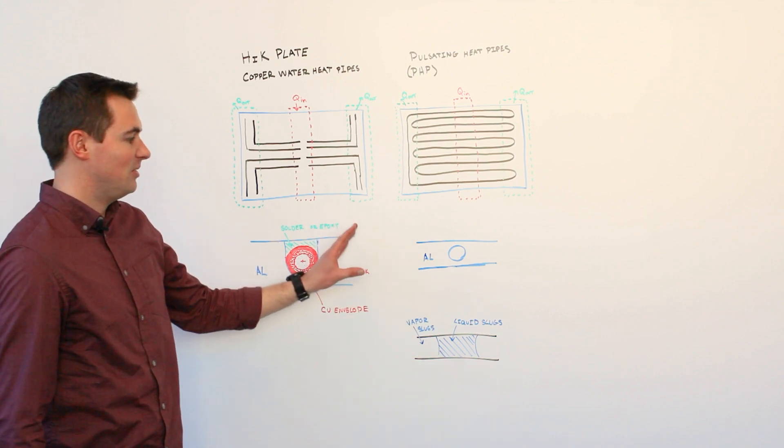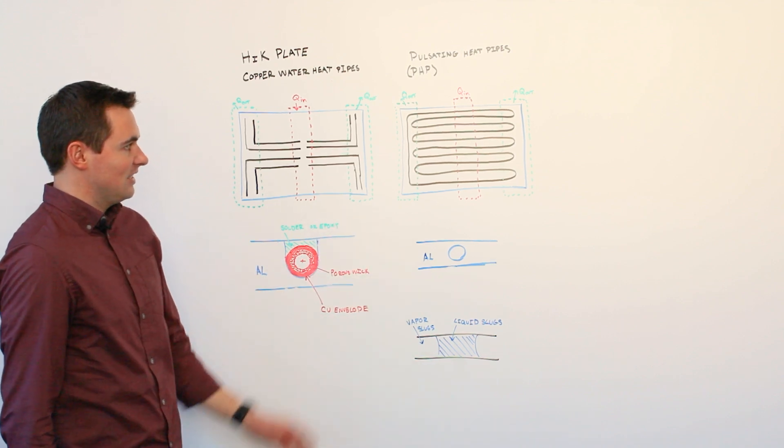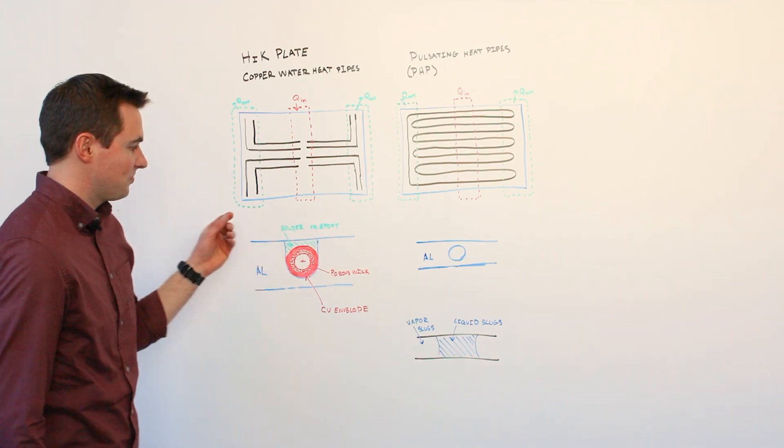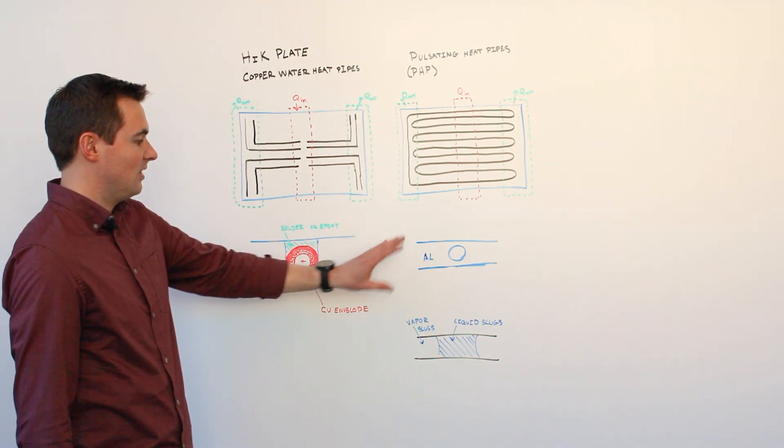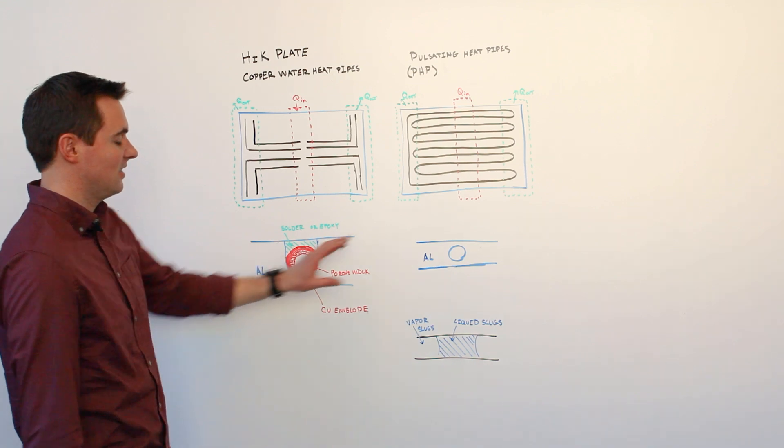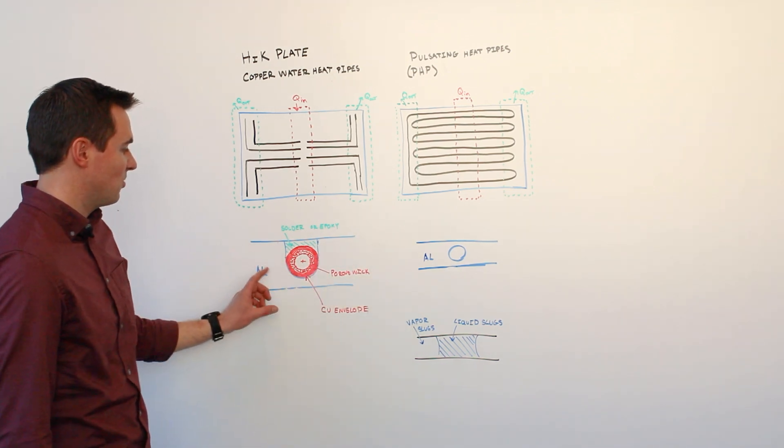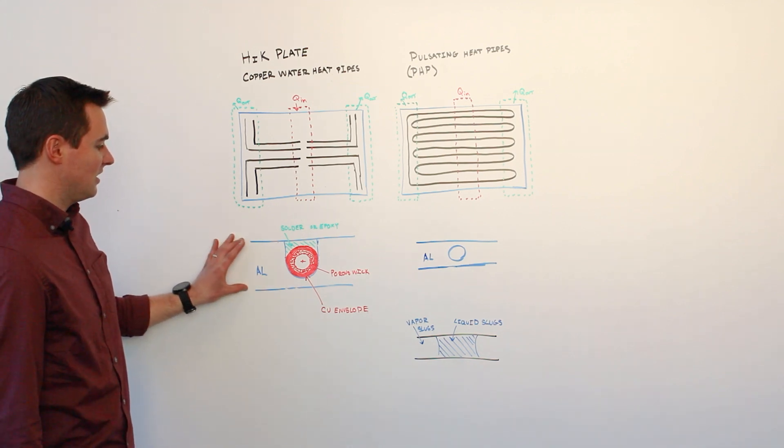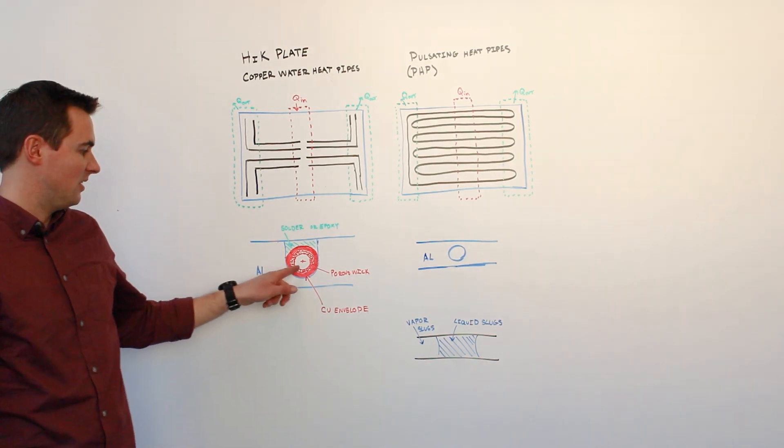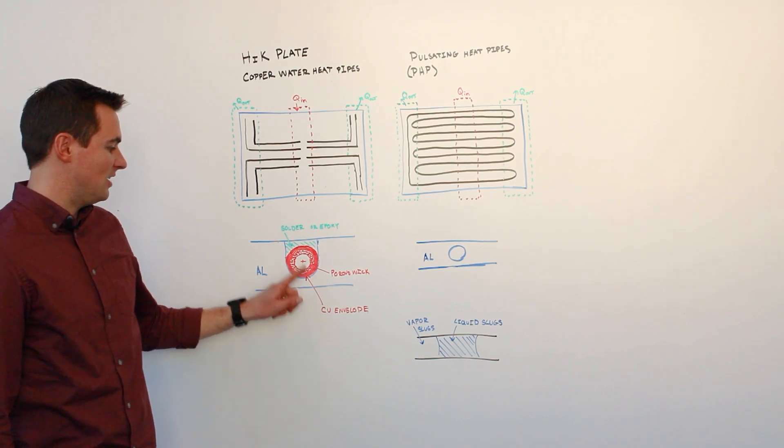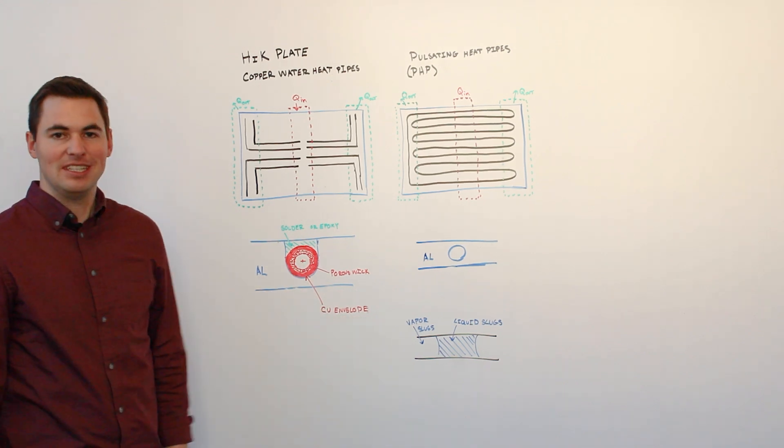And finally, pulsating heat pipes can be slightly more flexible as far as geometry configurations. Heat pipes require, as I mentioned, slightly thicker plates and also have bend radii that must be followed for the heat pipes.